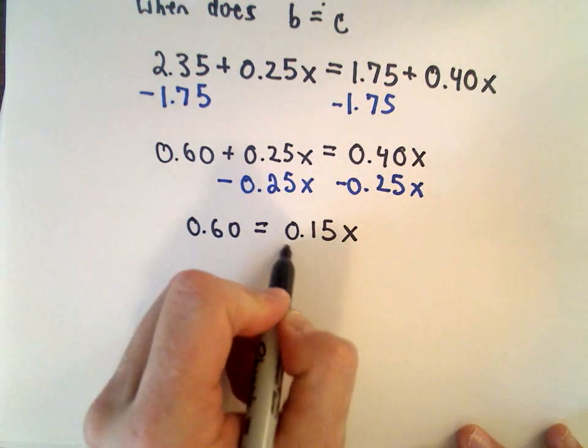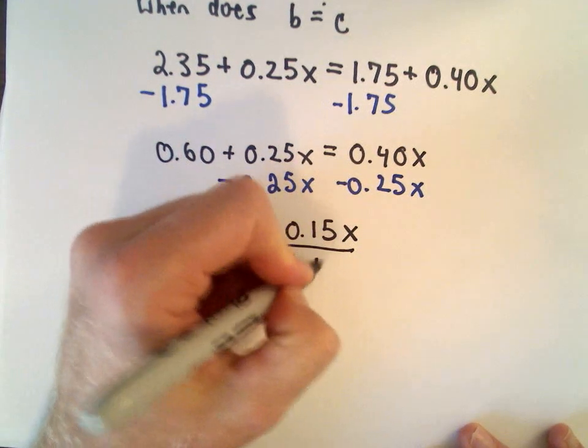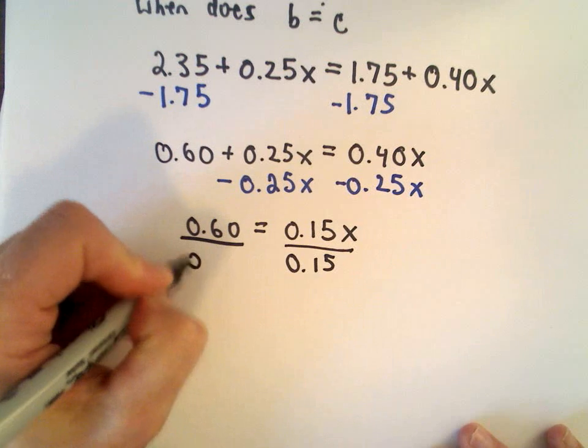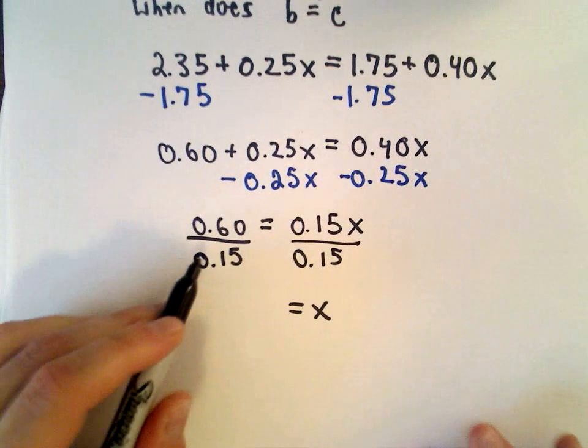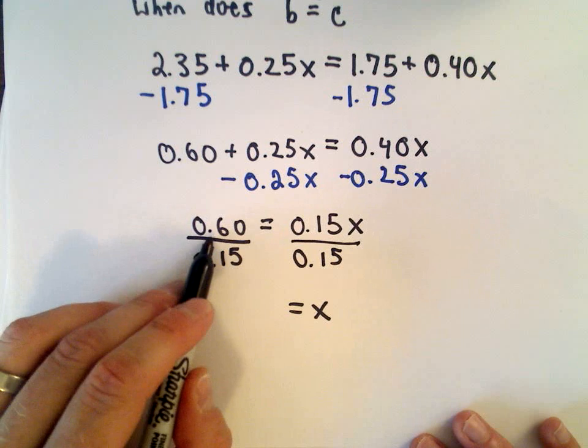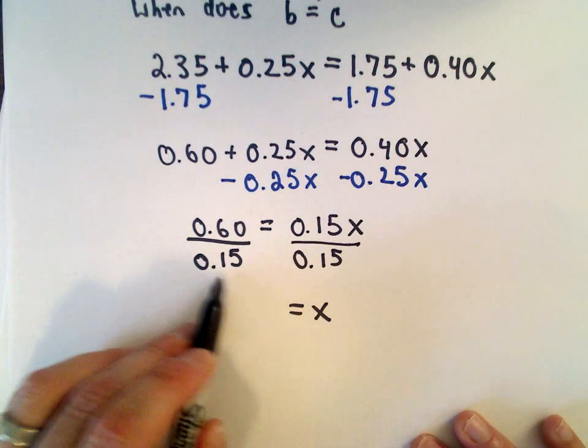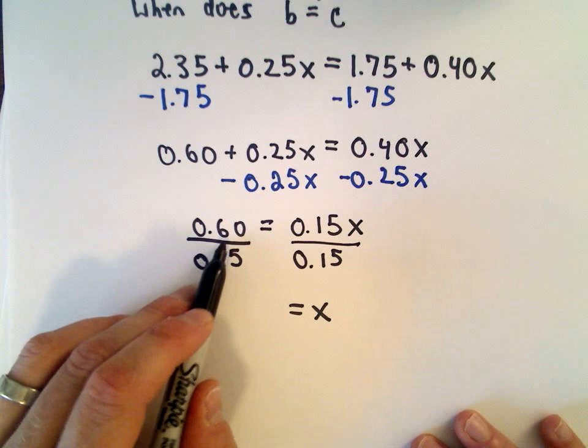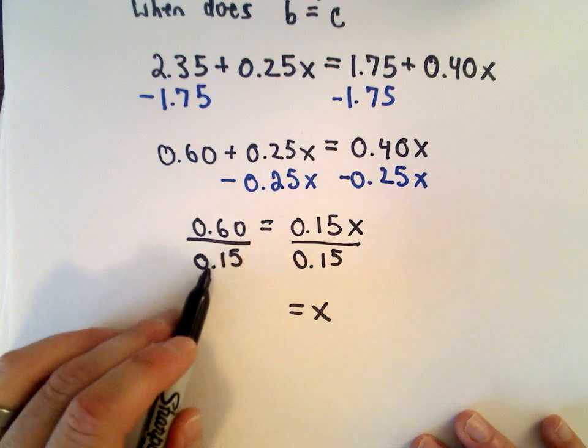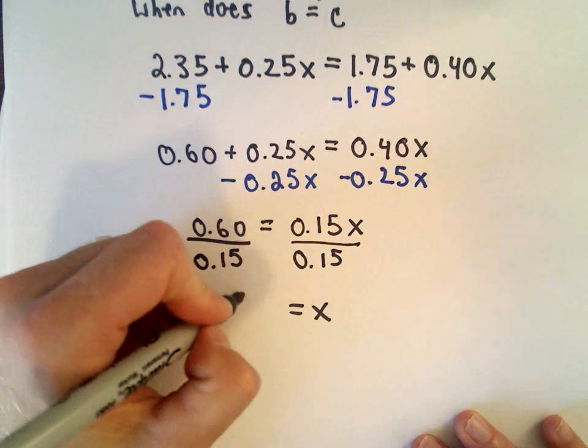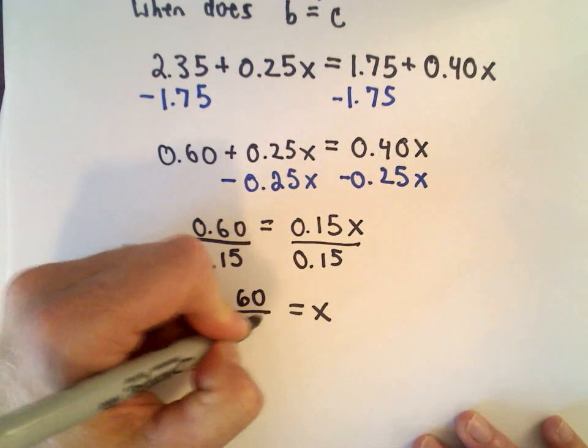And again, to solve for x now, I'm just going to divide both sides by 0.15. So x equals - I've got 0.60 divided by 0.15. You could think how many times does fifteen cents go into sixty cents. Equivalently, we can move the decimal place two places on the top, two places on the bottom. That would give us 60 over 15.